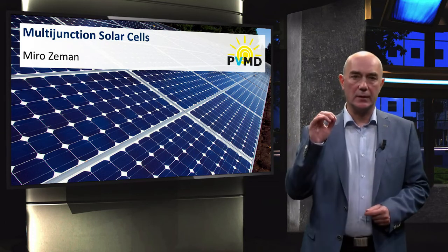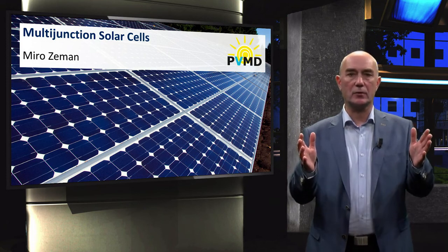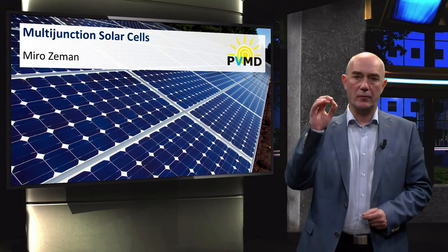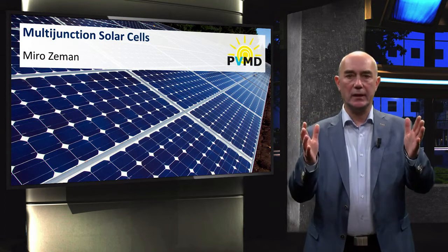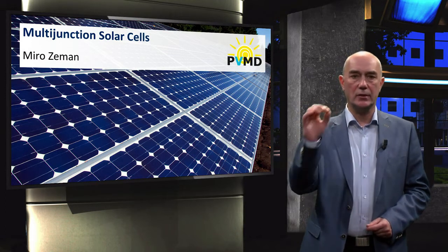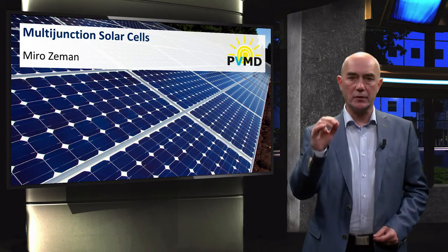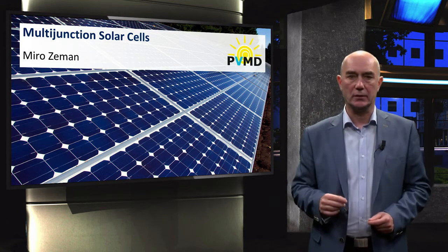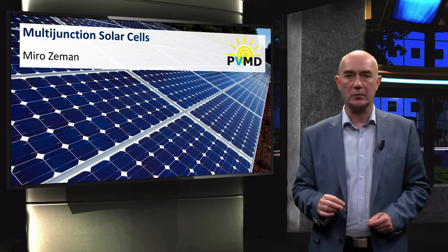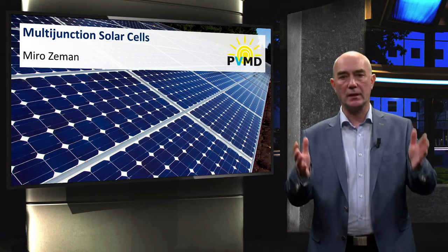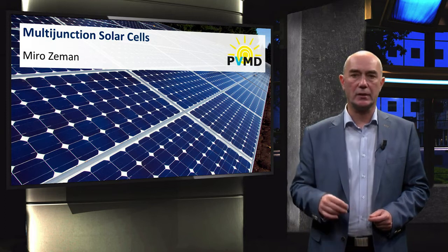Early in the week, we discussed the Shockley-Queisser limit as a fundamental limit for conversion efficiency of a single junction solar cell. A key word here is single junction. In this video, we will introduce the concept of multi-junction solar cells. They are used to surpass the theoretical maximum conversion efficiency of single junction solar cells, the so-called Shockley-Queisser limit.